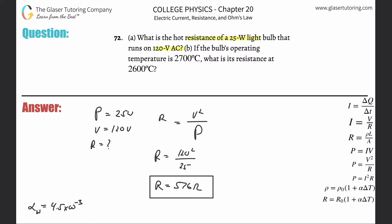So letter B. If the bulb's operating temperature is 2700 degrees Celsius, what is its resistance at 2600?